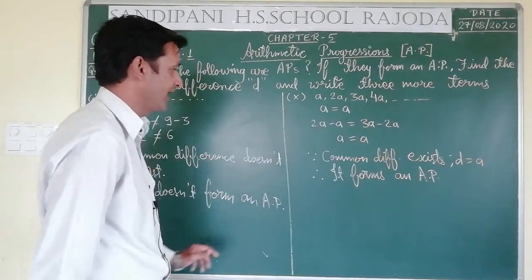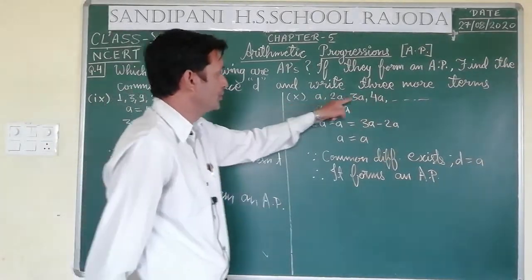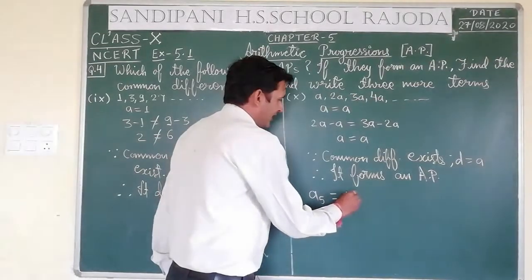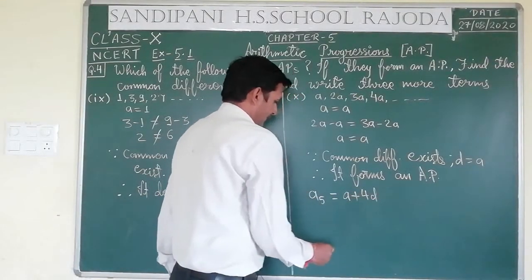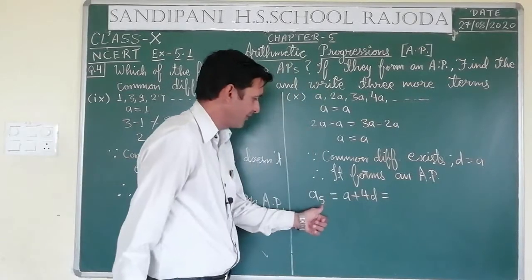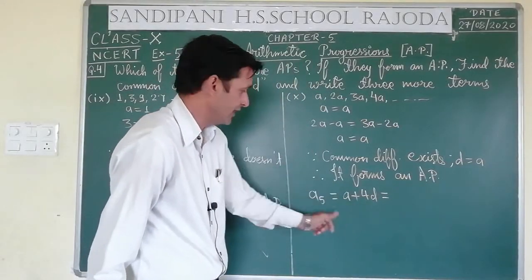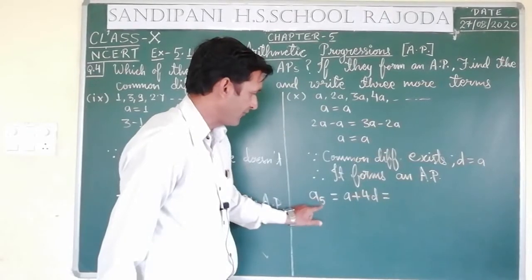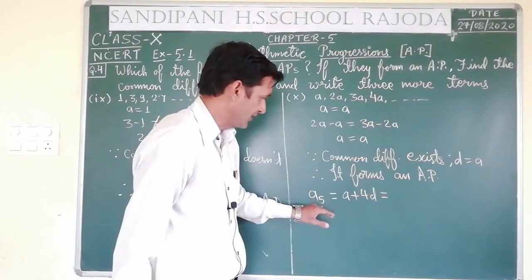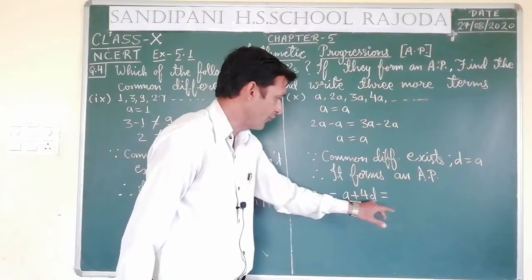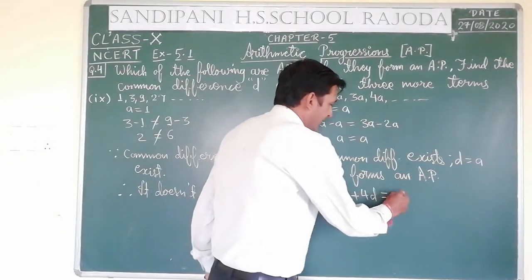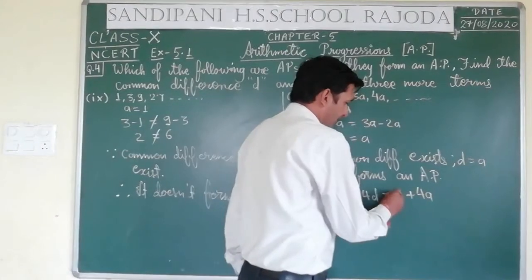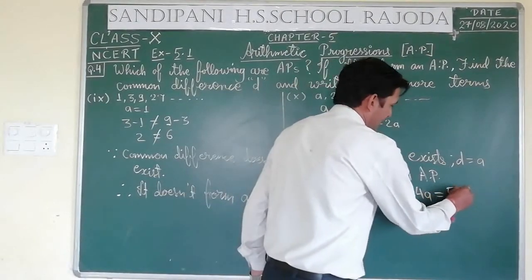Since it forms an AP with 4 terms given, we need to find the next 3 terms. A5 = A + 4D = A + 4A = 5A. Using the formula An = A + (N−1)D, for A5 we write A + 4D because one less than 5 is 4. A6 = A + 5D = A + 5A = 6A.